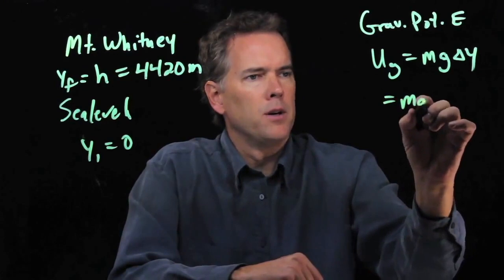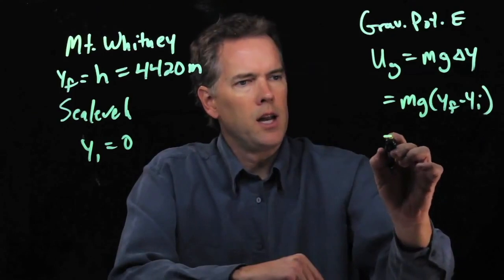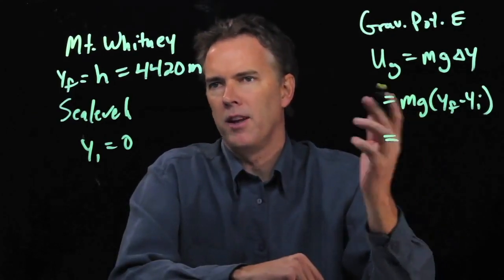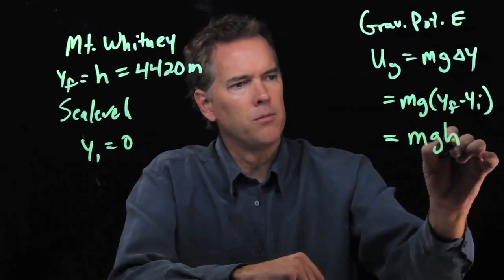Okay, but we know what delta y is. That's just y final minus y initial. And in this case y final is h, y initial is zero. So this just becomes mgh.